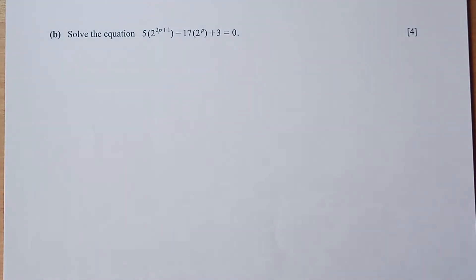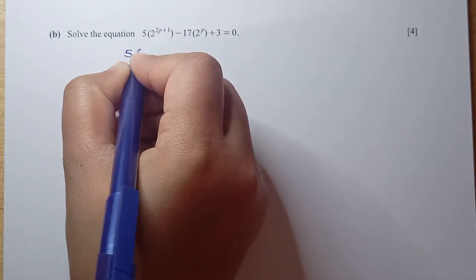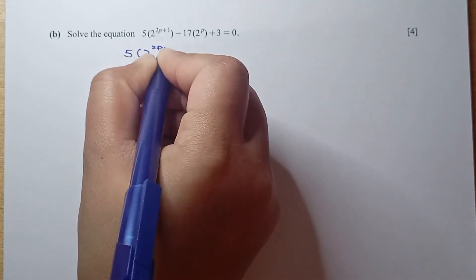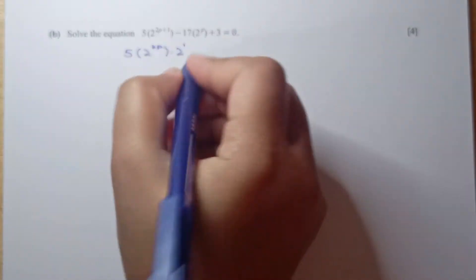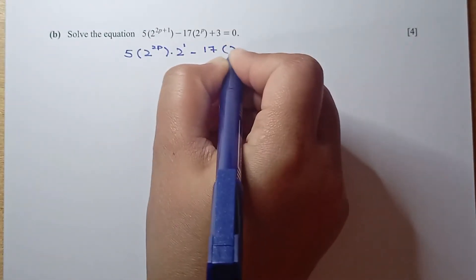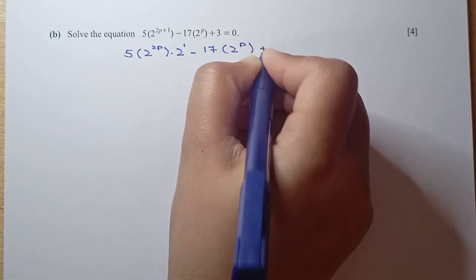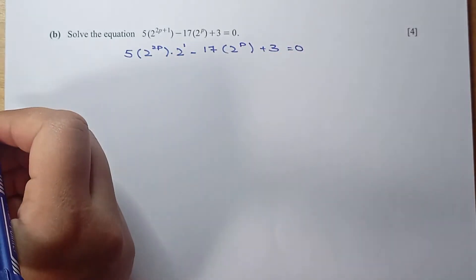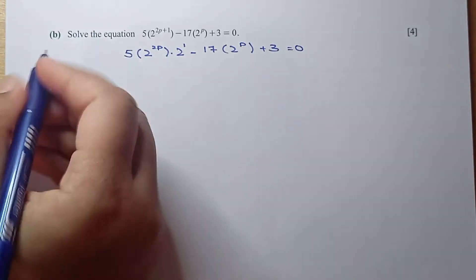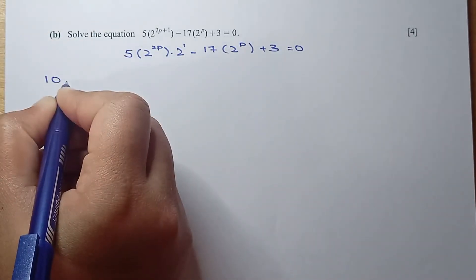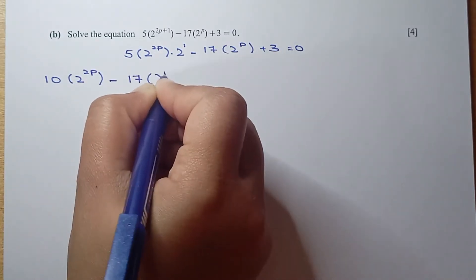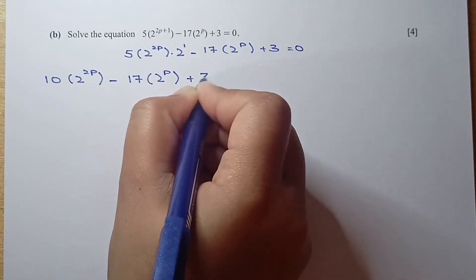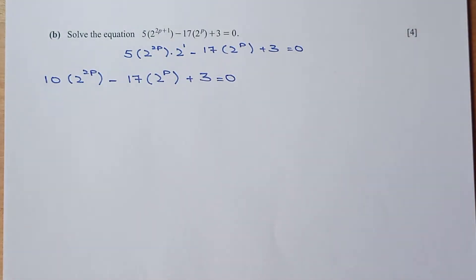Part b, solve the equation. We rewrite it as 2 to the power 2P times 2 to the power 1 — since 2P plus 1 — the same base, we add powers, minus 17 times 2 to the power P, plus 3 equals 0. So this becomes 10 times 2 to the power 2P minus 17 times 2 to the power P plus 3 equals 0. Now we can factorize it.